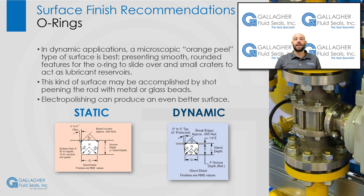In static applications, mating surfaces should have a 32-micro-inch RMS value for liquids and a 16-micro-inch RMS value for gases and vacuum. The side walls of the gland should have a 63-micro-inch RMS value. A dynamic mating surface should have a 16-micro-inch RMS value. The side walls of the gland, as well as the groove diameter, which is the static mating surface in dynamic applications, should all have a 32-micro-inch RMS value.